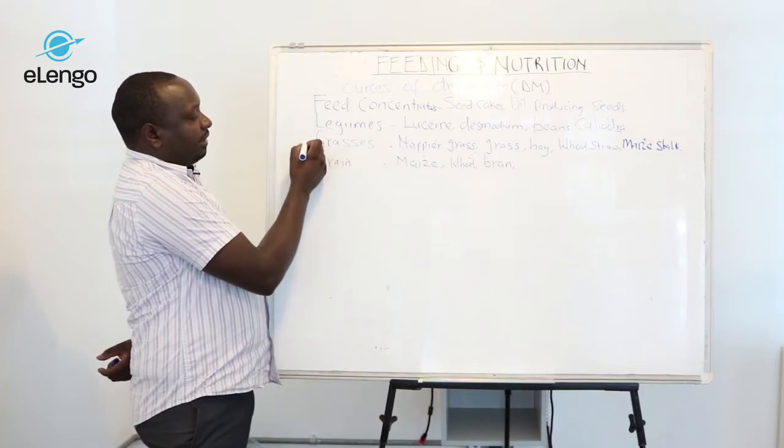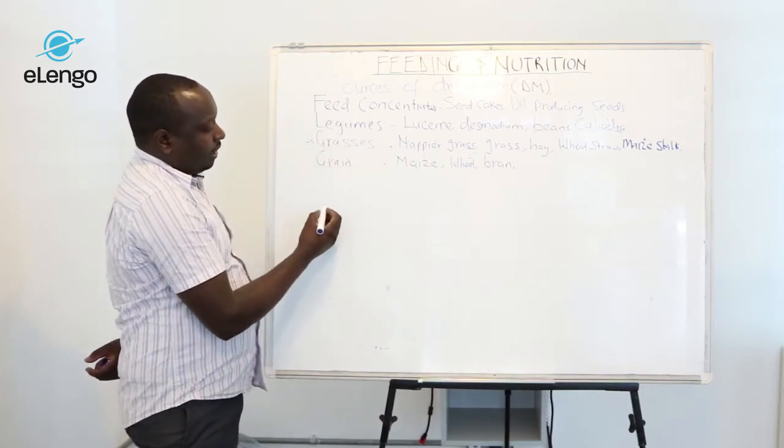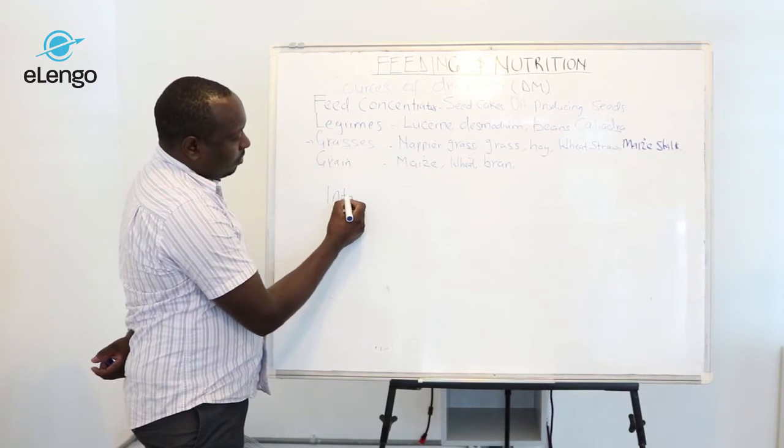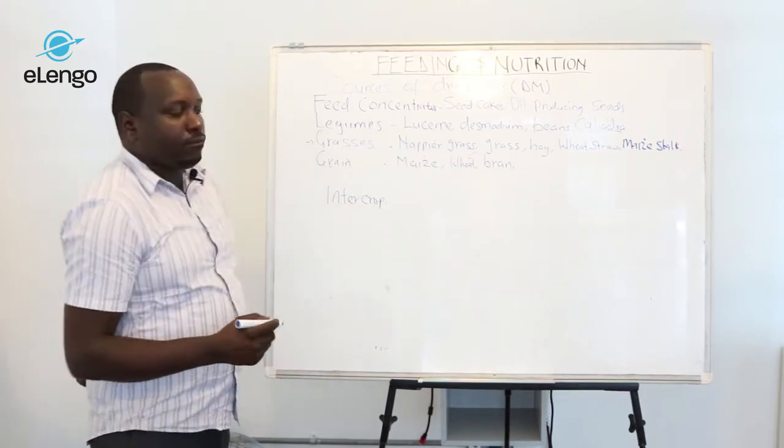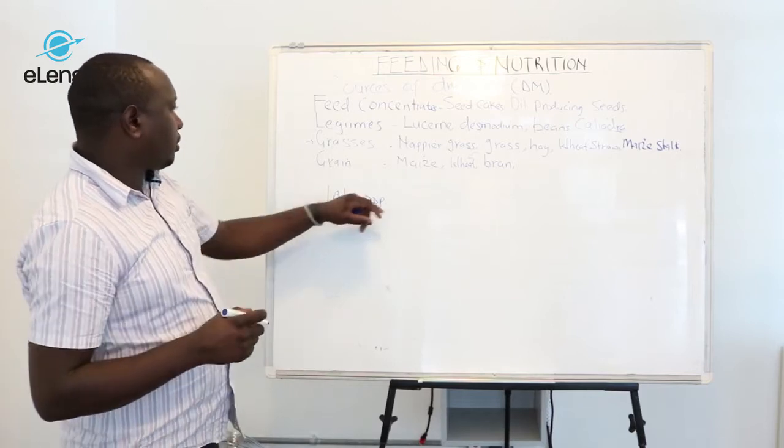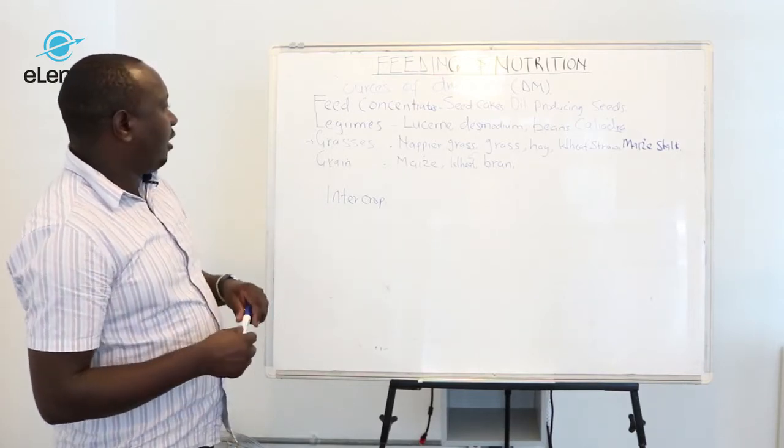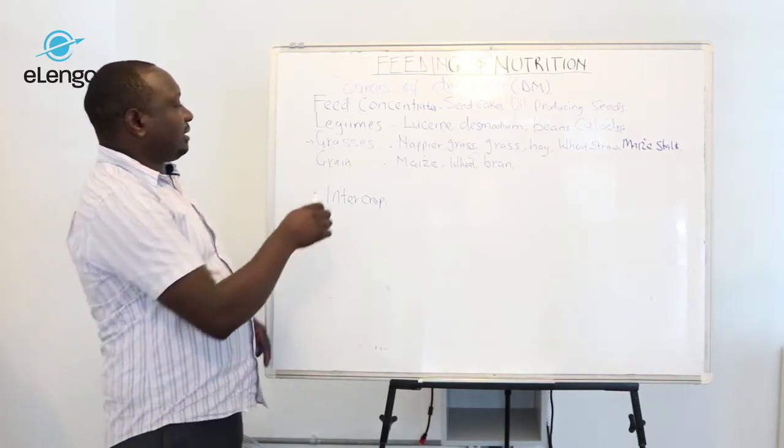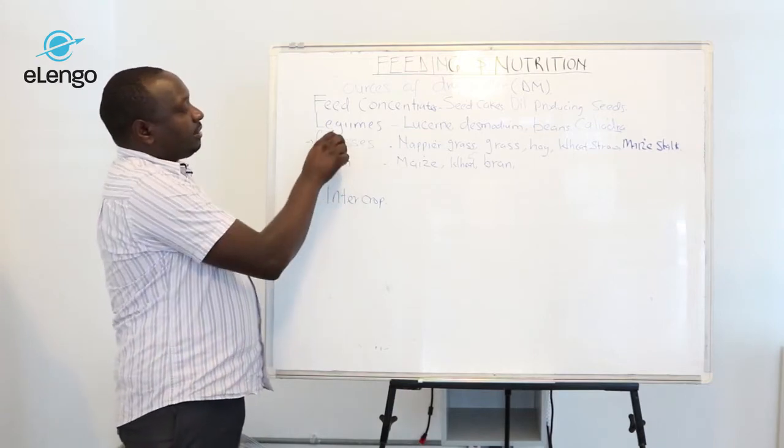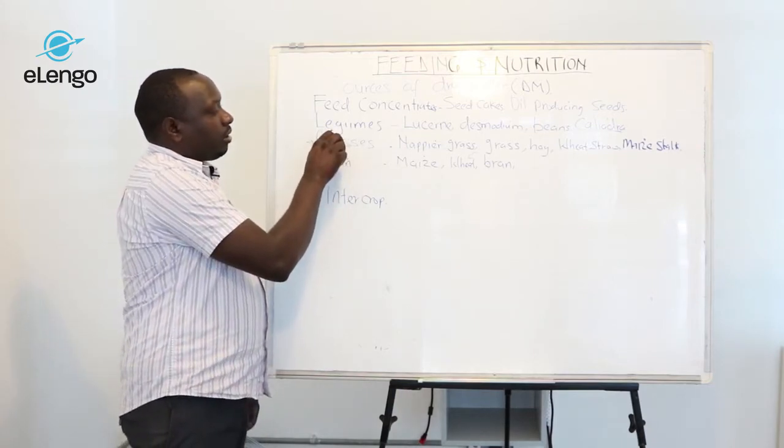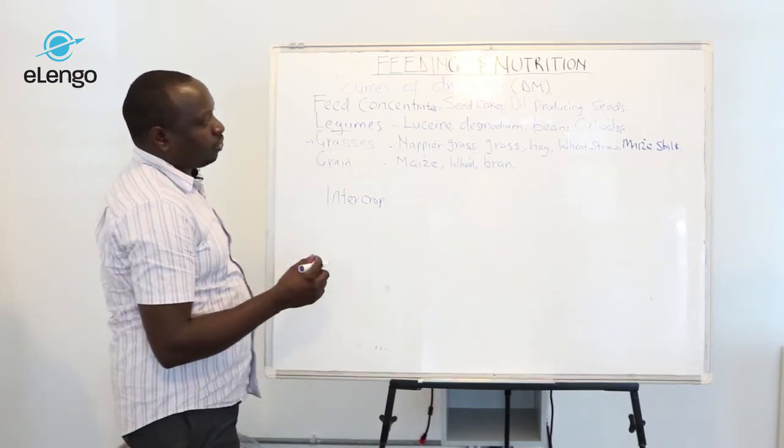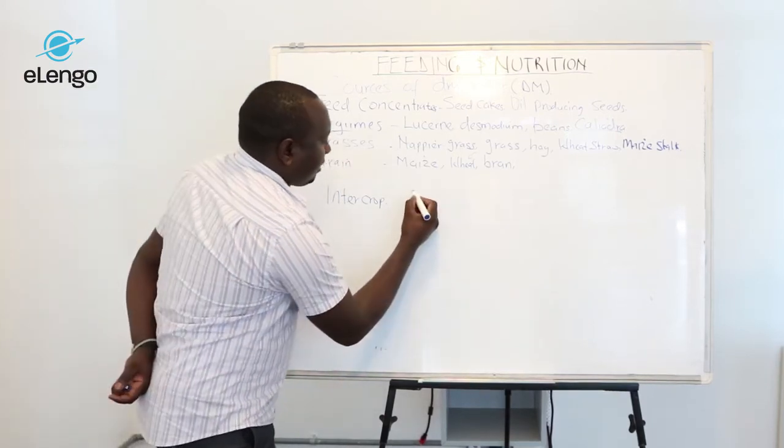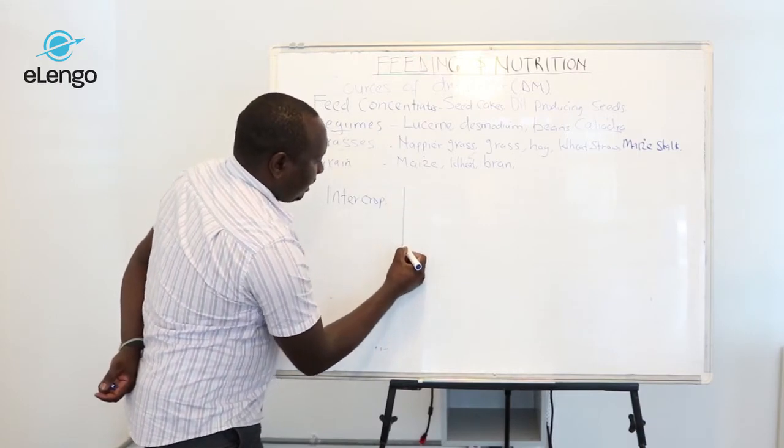If the farmer has grasses, he or she can intercrop two or three fodder crops. For example, grasses and leguminous fodder go very well together. Let me illustrate here.